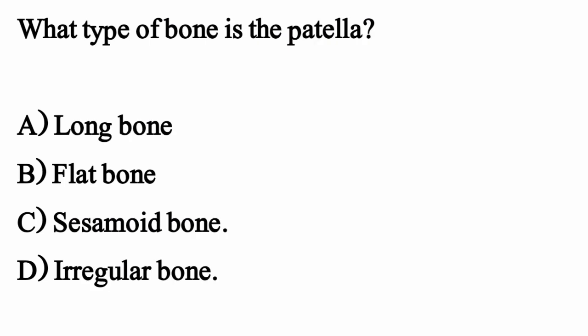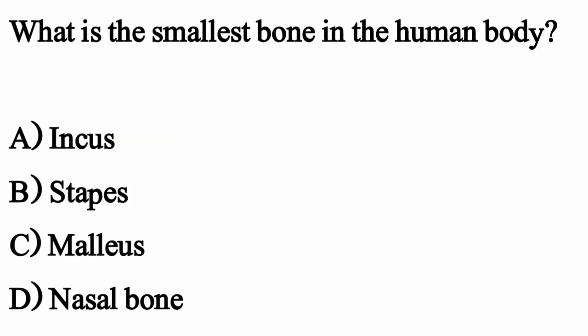What type of bone is the Patella? The correct option is Option C: Sesamoid Bone. What is the smallest bone in the human body? The correct option is Option B: Stapes.